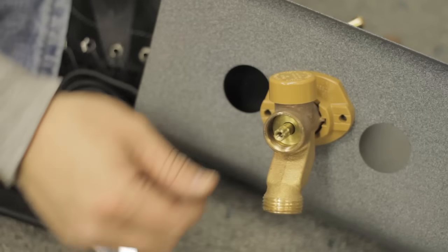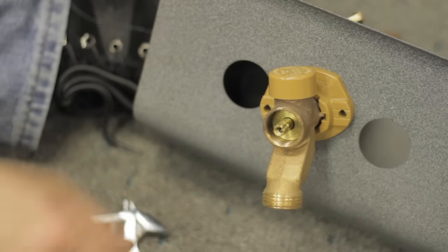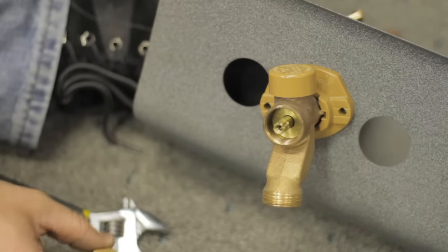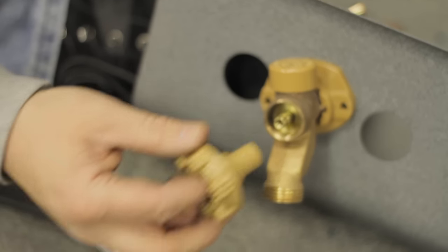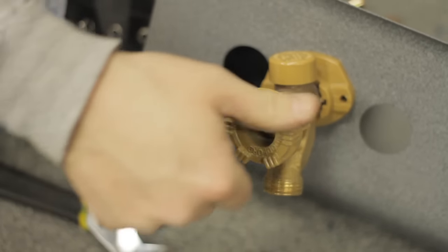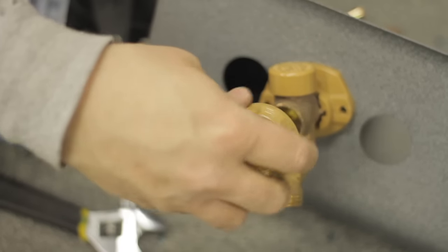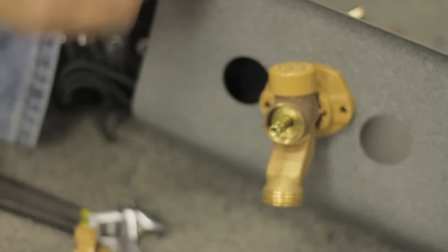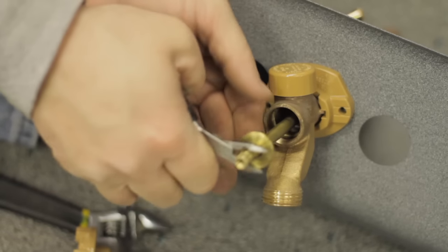Once you remove that, your stem is now ready to come out. Sometimes the easy way to get it out is take the handle, put it back on and you'll twist that stem. Most stems will twist five or six times and then you pull them out.